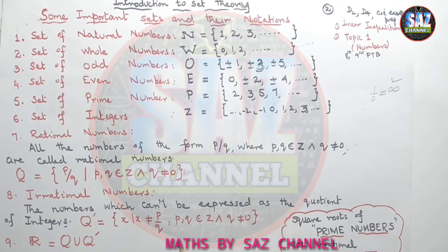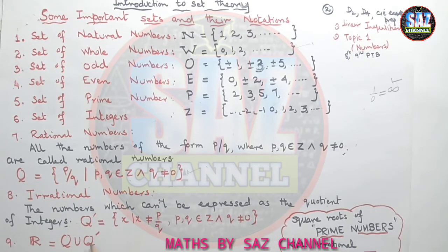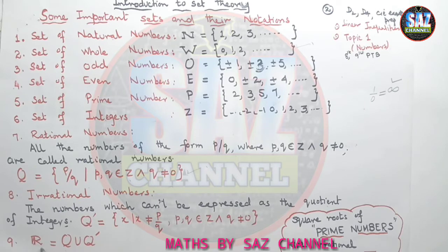And then at the end, the largest superset or the superset of all these sets, when we join rational numbers and irrational numbers is the set of real numbers.